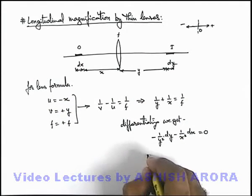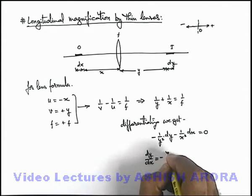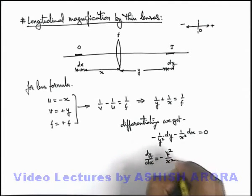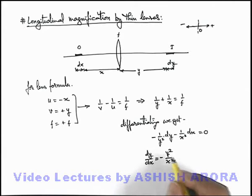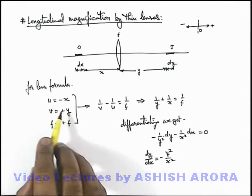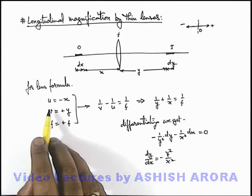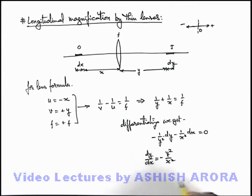From here we are getting the value of dy by dx is equal to minus y square by x square. And y by x is actually v by u, which can be written as magnification. So the magnitude of dy by dx is equal to square of magnification.